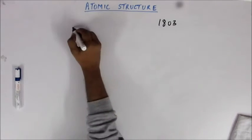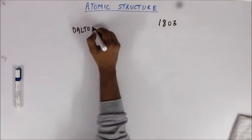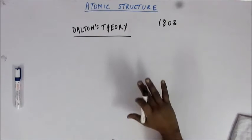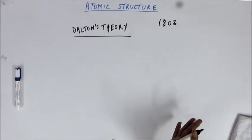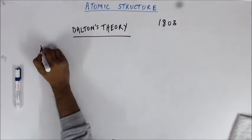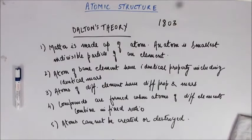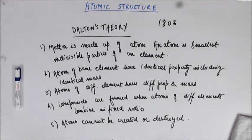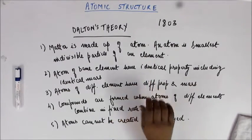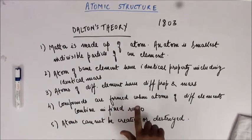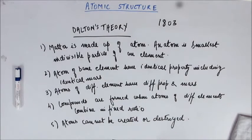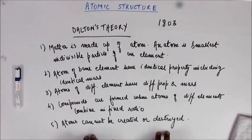In 1803, a scientist called John Dalton gave his theory — Dalton's atomic theory. Let me read out the five statements of the theory. First: matter is made up of atoms, and the atom is the smallest indivisible particle of an element. Second: atoms of the same element have identical properties including identical mass. Third: atoms of different elements have different properties and mass. Fourth: compounds are formed when atoms of different elements combine in a fixed ratio. Fifth: atoms cannot be created or destroyed — in a chemical reaction there is just rearrangement of atoms.